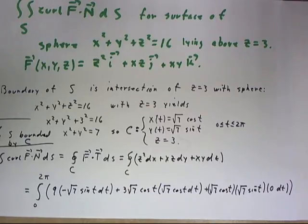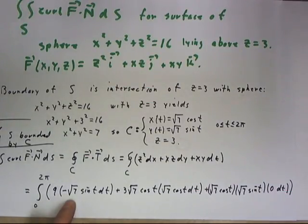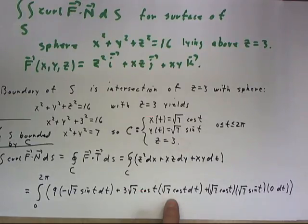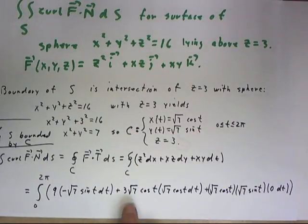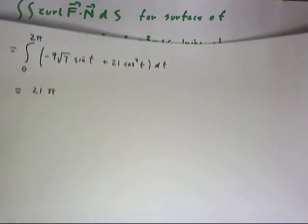So we have very little work left to do. This is just going to be 9 times negative square root of 7 sine t integrated with respect to t. And then we're going to have a cosine squared here, we're going to have 3 times 7, which is 21. And our integral is just going to then be integral from 0 to 2 pi of negative 9 square root of 7 sine t plus 21 cosine squared t dt.